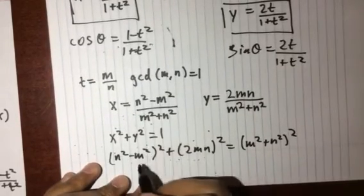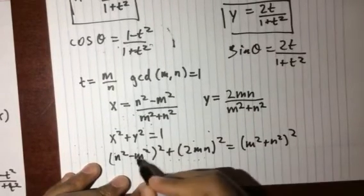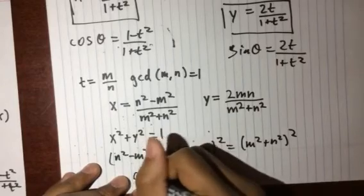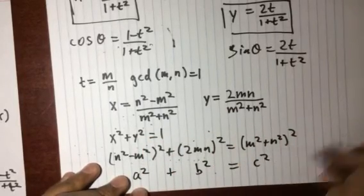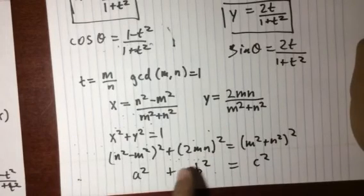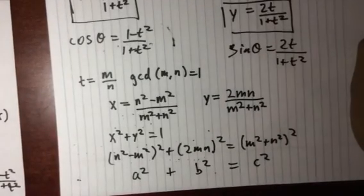But these are all integers because m and n are integers, and this looks just like the Pythagorean theorem. And so this actually gives us a way to generate primitive Pythagorean triples. Alright, that's it for today.